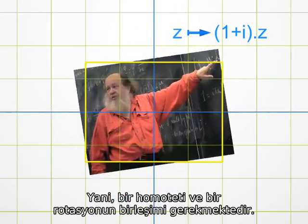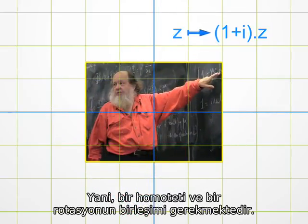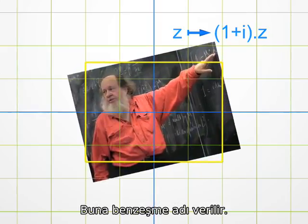In simple words, one has to combine a homothety and a rotation. This is called a similarity.